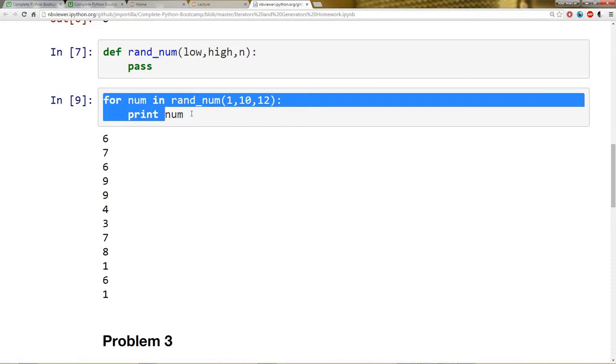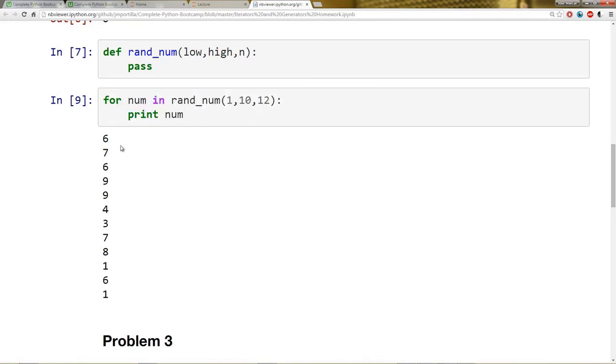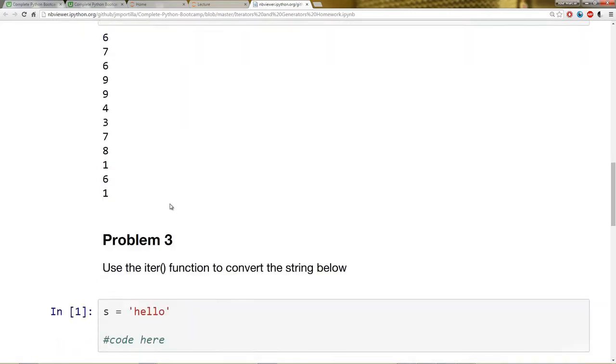And I want you to use it to yield or generate those numbers. And then you can use it to make sure your code runs similar to this. Obviously, these numbers won't be exactly the same because you're randomly generating them.